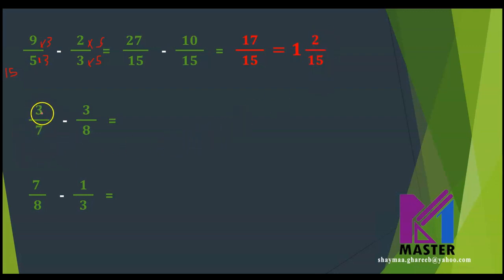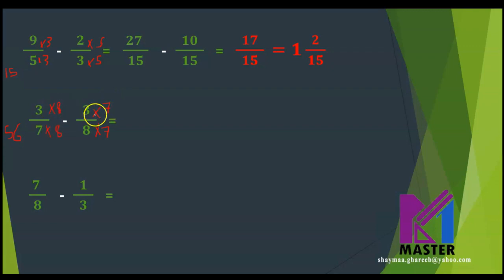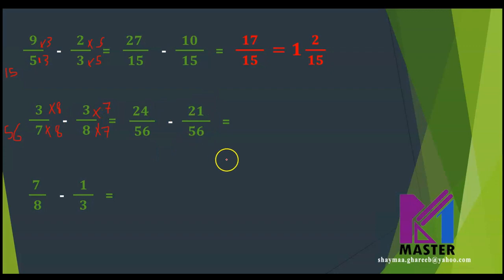The second part: 3 over 7 minus 3 over 8. The least common multiple between 7 and 8 is 56. I will change both to be 56 by multiplying the first one by 8 up and down, and the second one by 7 up and down. The first fraction will be 24 over 56, and the second will be 21 over 56. 24 minus 21 is 3 over 56. Can I simplify this fraction? No — this is the simplest form.